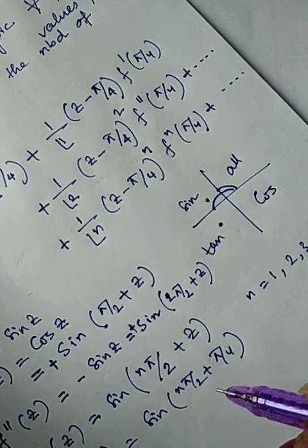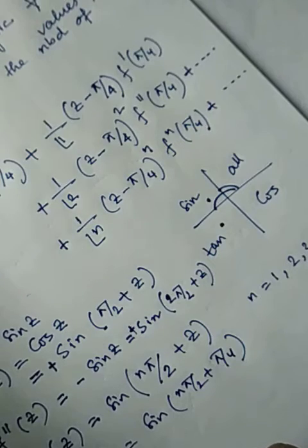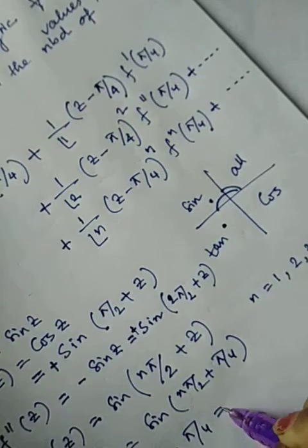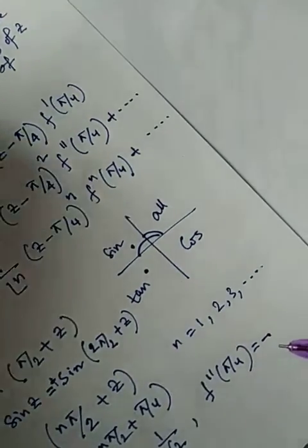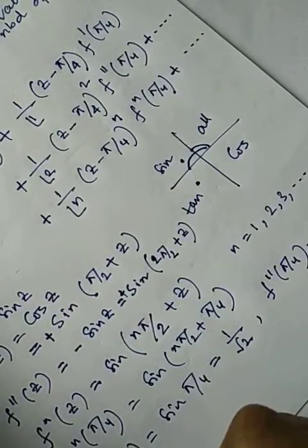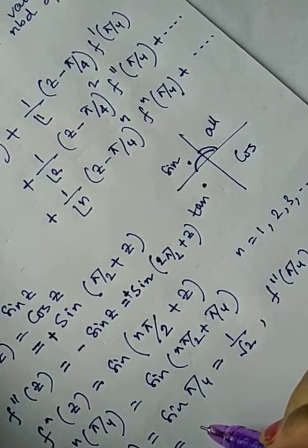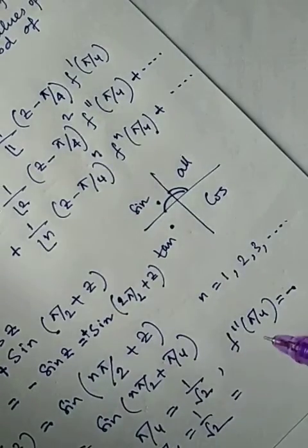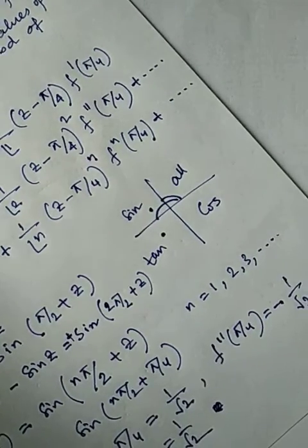So: f(π/4) = sin(π/4) = 1/√2; f'(π/4) = cos(π/4) = 1/√2; f''(π/4) = −sin(π/4) = −1/√2. Putting all these values into the series...